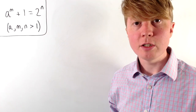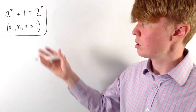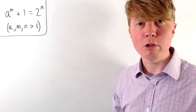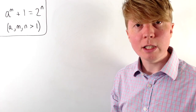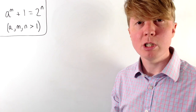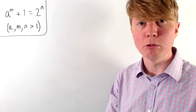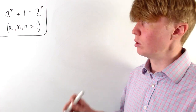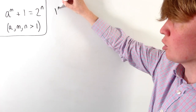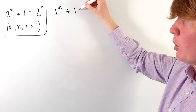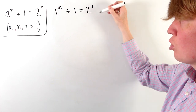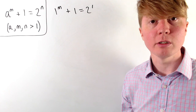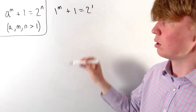We're going to find all positive integer solutions to this equation, where all integers have to be strictly greater than 1. Why are we saying they all have to be greater than 1? Well, if we were to allow a and n to be equal to 1, then we could get solutions of the form 1 to the m plus 1 equals 2 to the 1 — infinitely many solutions, but they're not particularly interesting.